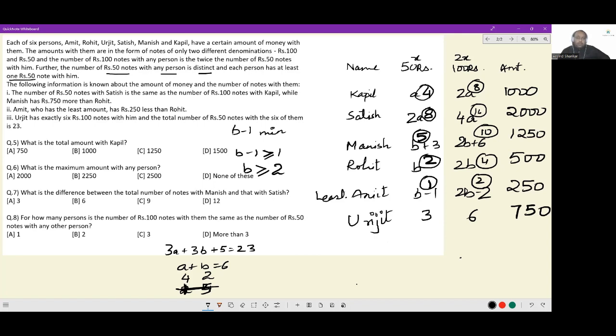Let's get to individual questions. What was the total amount with Kapil? Kapil had 1000 rupees. Option B. What is the maximum amount with any person? The maximum amount with any person is with Satish, which is 2000. What is the difference between the total number of notes with Manish and that with Satish? Manish had 15 notes. Satish had 24 notes. So the difference between them is 9.